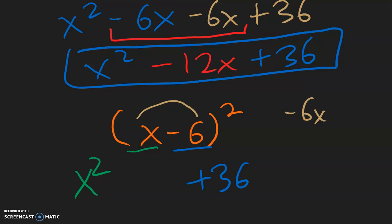But remember from above, when we square a binomial, we are going to have two terms in the middle that are exactly the same. So we just take negative 6x and multiply by 2, which gives us negative 12x — the same answer as what we got after writing everything out.